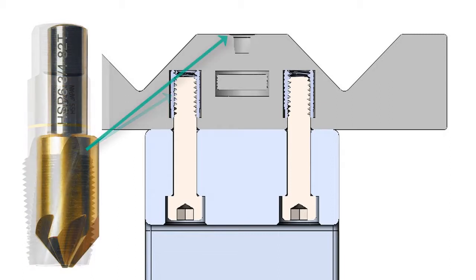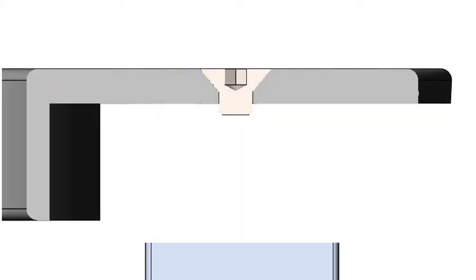Countersinks, as discussed earlier, can be created from a spot drill or special countersink tools. Countersinks are often called chamfers and they allow easier assembly of mating parts or the head of the fastener to sit below the surface of a part.